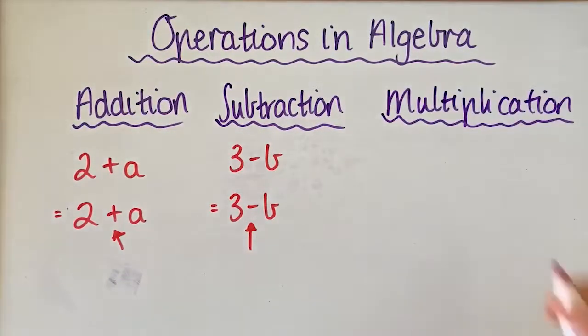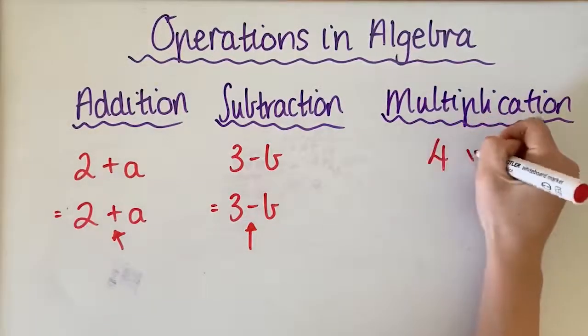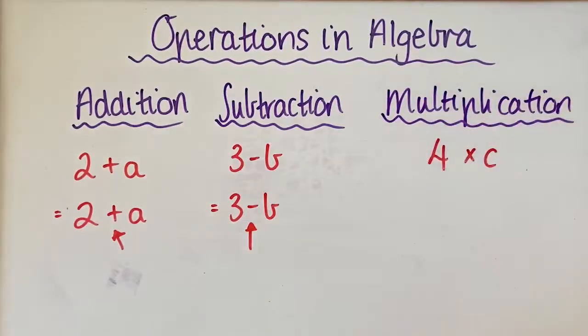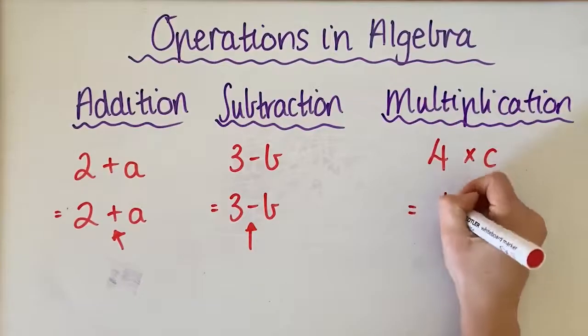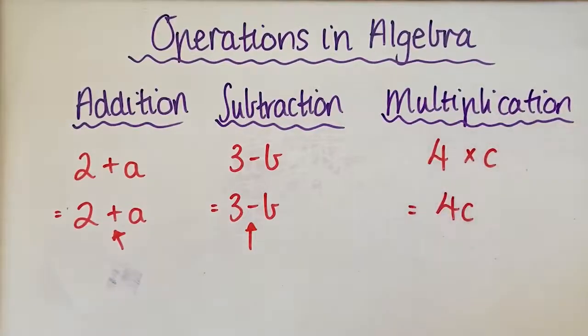Now this is where things get a little bit different. If you had 4 times C, in algebra, you write multiplication as touching each other like this. So 4 times C becomes 4C.